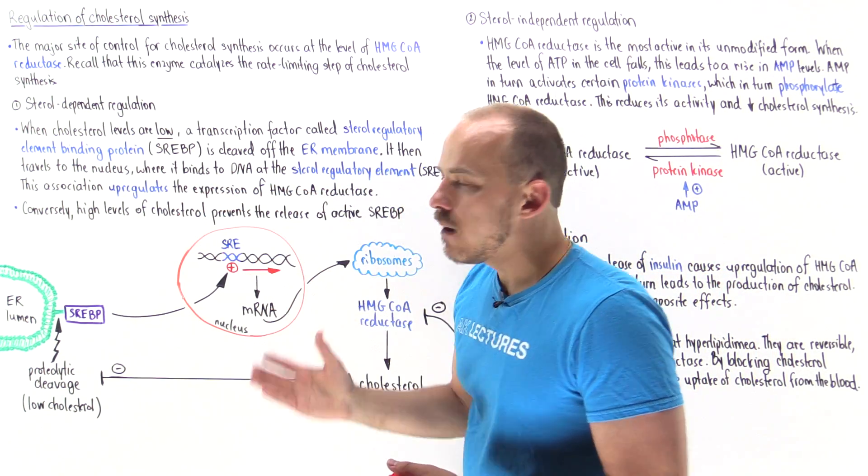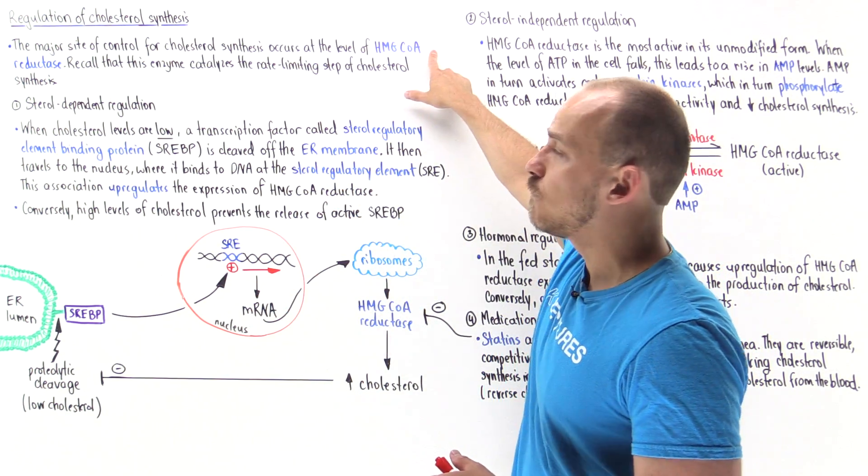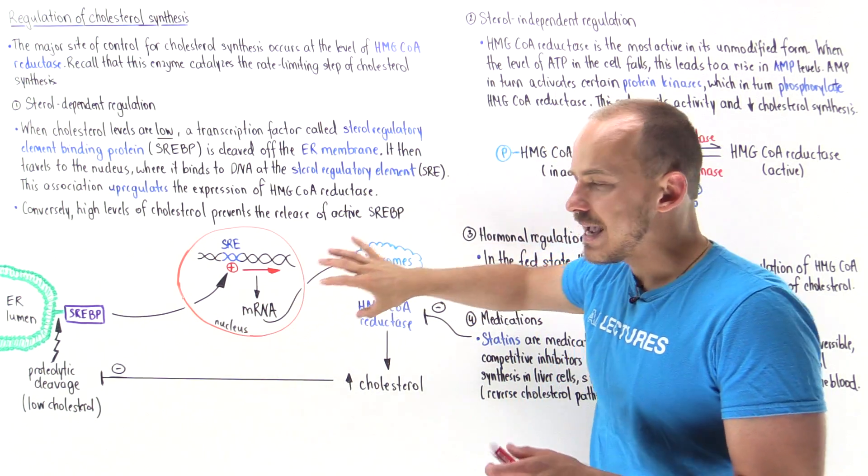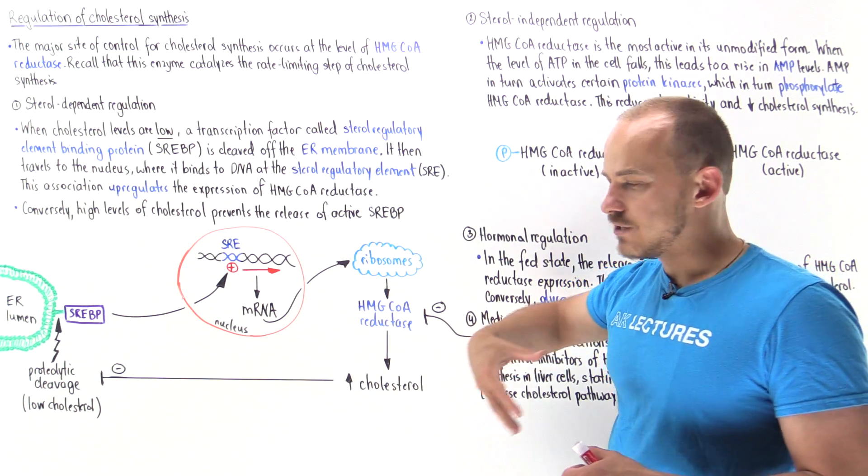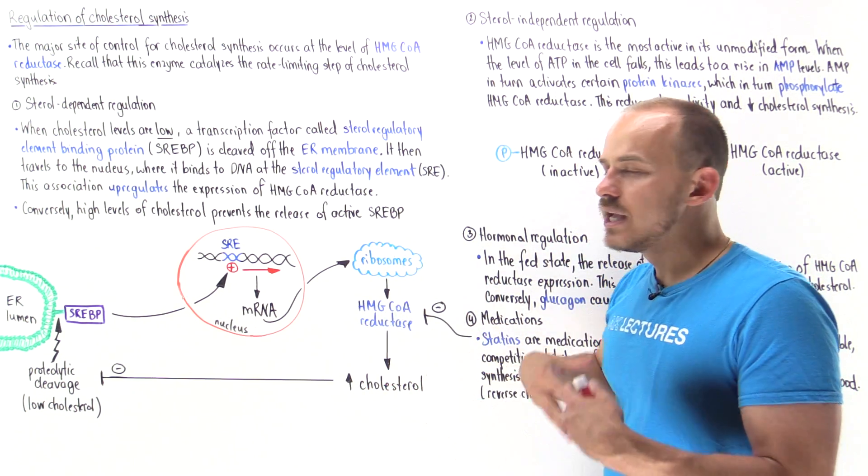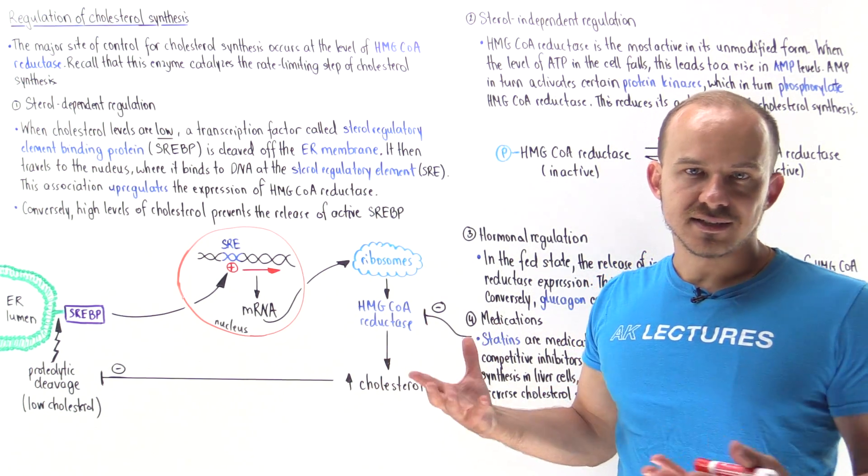Once bound it upregulates the expression of the mRNA that codes for HMG-CoA reductase. The mRNA exits the nucleus, goes onto the ribosomes, the ribosomes essentially create that enzyme and now we have more enzyme to create cholesterol. That increases the amount of cholesterol inside the cell.